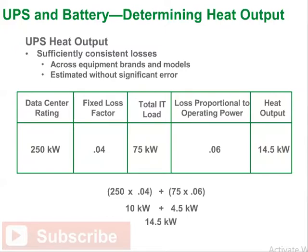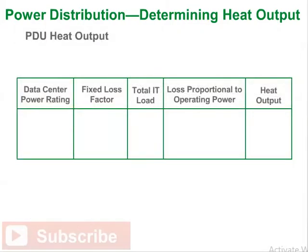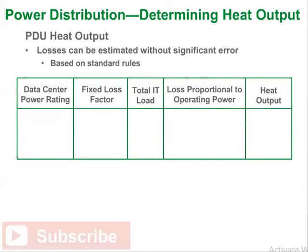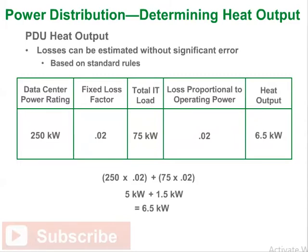Our next heat-producing component is the power distribution system. Like the UPS, it consists of a fixed loss and a loss proportional to operating power. We take the power rating of 250 kilowatts and multiply by the fixed loss factor of 0.02, giving 5 kilowatts. We then add this to 75 kilowatts multiplied by the proportional loss factor of 0.02, giving 1.5 kilowatts. The total, 5 plus 1.5, equals 6.5 kilowatts of heat from the power distribution system.